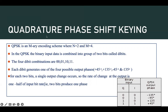Suppose instead of transmitting a single symbol, if we transmit two symbols — that is if n is equal to 2 — then the total number of combinations available will be 2 to the power 2, which equals 4 combinations. Those four combinations are listed in the table: 00, 01, 10, and 11. Each combination is represented by a phase shift, so we have four different phase shifts.